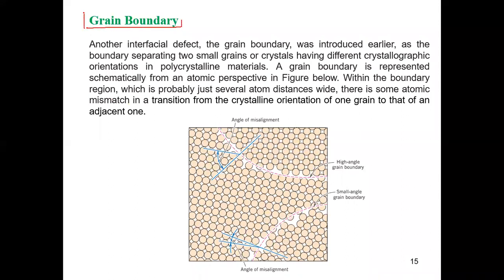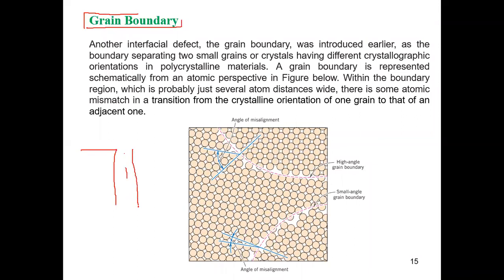From the SEM — scanning electron microscope — picture of the material, we can observe the atomic orientation. At the grain boundary, there is no regular arrangement of atoms.